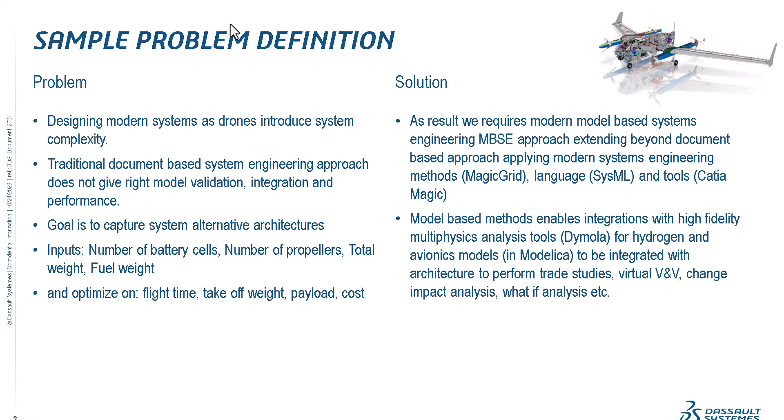The goal is to capture system alternative architectures using a system architectural definition language like SysML. Inputs include number of battery cells, number of propellers, total weight, and fuel weight. We want to optimize on fly time, take-off weight, payload, and cost — picking the optimal architecture from the available ones.